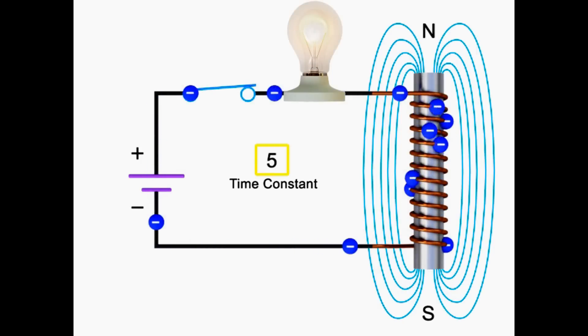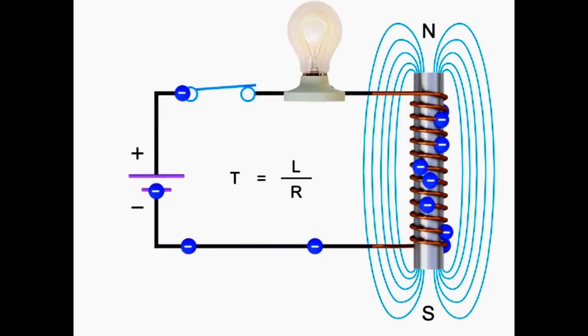Or 5t, where t is equal to L divided by R. The light bulb will then be at its maximum brightness.